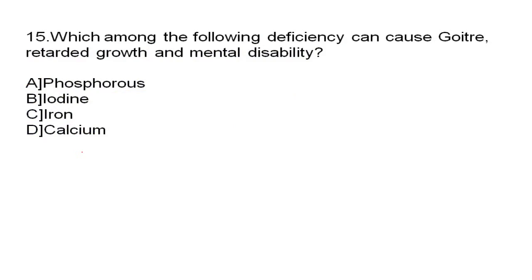Which of the following deficiency causes goiter? It is lack of iodine. The right answer will be B.